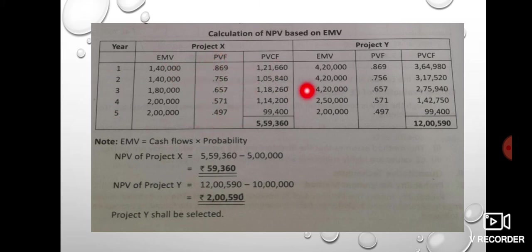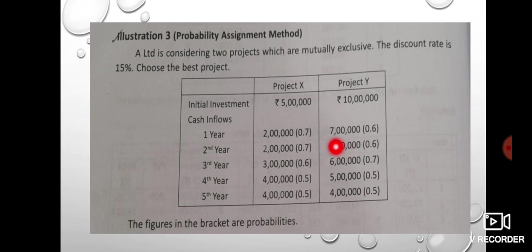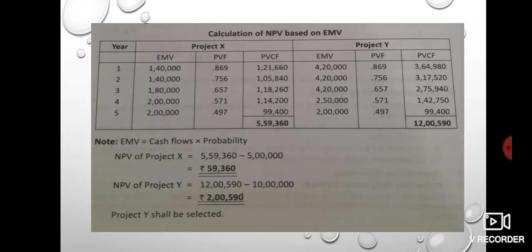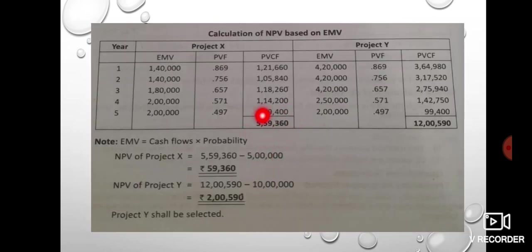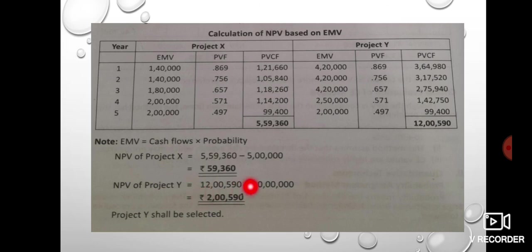The present value factors are $1.869 and $1.756. When you multiply these figures, you get the total present value. We then calculate the net present value: the initial investments are $5 and $10. The resulting cash flows give us the NPVs for comparison.